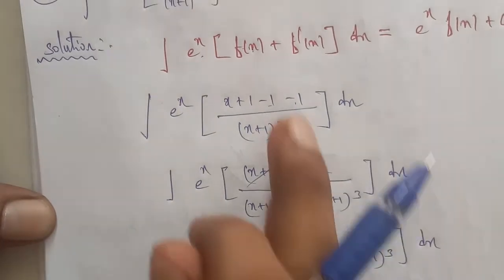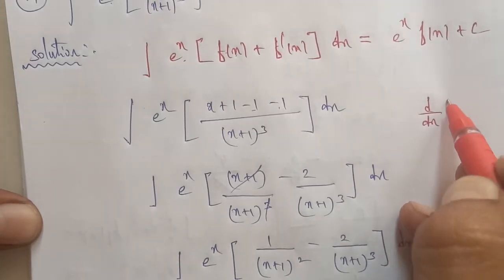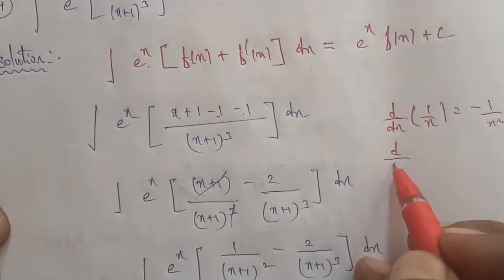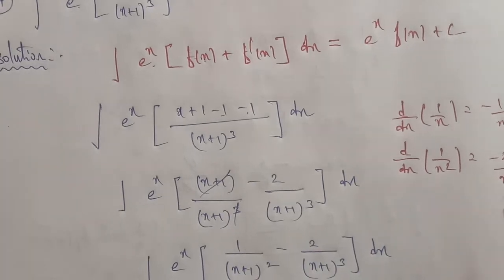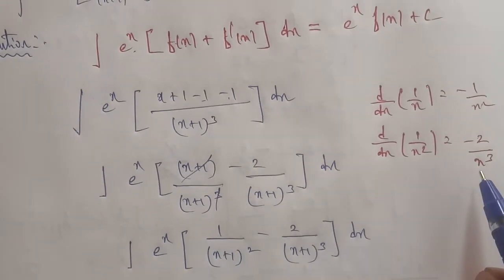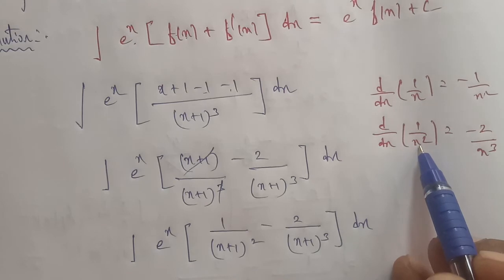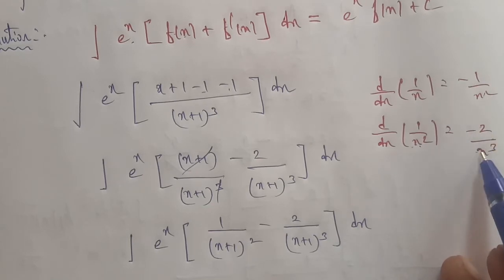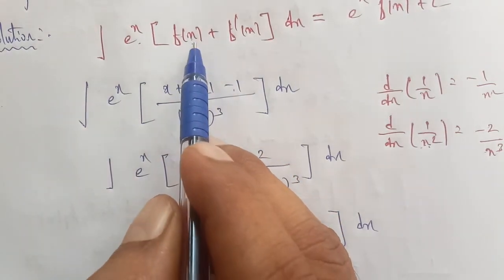So this part matches the formula. To confirm: differentiation of 1 by x gives minus 1 by x square. And differentiation of 1 by x square gives minus 2 by x cube. So f of x and f dash of x are identified.